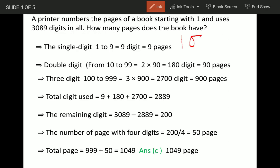So balanced digits are 200 and each number will have 4 digits, so 200 divided by 4 - that means another 50 pages. So total number of pages are up to here.